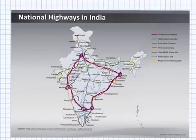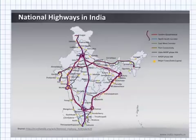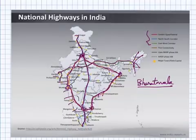Apart from the Golden Quadrilateral, we have the North-South Corridor connecting Srinagar to Tuticorin. Then we have the East-West Corridor connecting Kandla and extending to the Union Territory of Diu, and connecting to Silchar in the Northeast. These are the major national highway road corridors. We should remember what these corridors are.